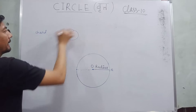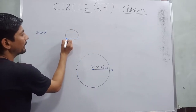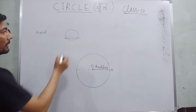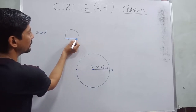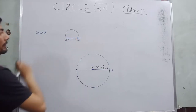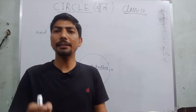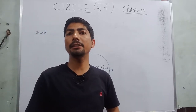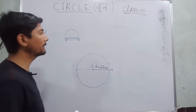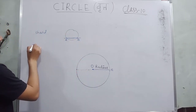We draw a line which passes through any two points of a circle. The distance between these two points is called the chord of a circle. So maan lijiye A and B hain, to AB chord ho gaya. Yaani ki the distance between two points on a circle is called a chord. We can draw infinite chords in a circle.